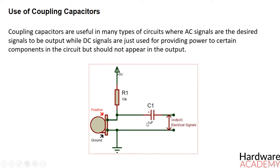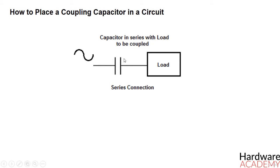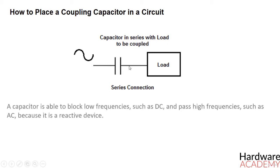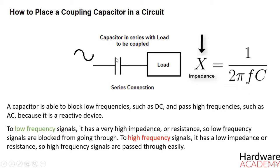Now let's see how to place a coupling capacitor in a circuit. In order to place a capacitor in a circuit for AC coupling, the capacitor is connected in series with the load to be coupled. A capacitor is able to block low frequencies such as DC and pass high frequencies such as AC because it is a reactive device — it responds to different frequencies in different ways. To low frequency signals, it has a very high impedance or resistance, so low frequency signals are blocked from going through. To high frequency signals, it has a low impedance or resistance, so high frequency signals are passed through easily.